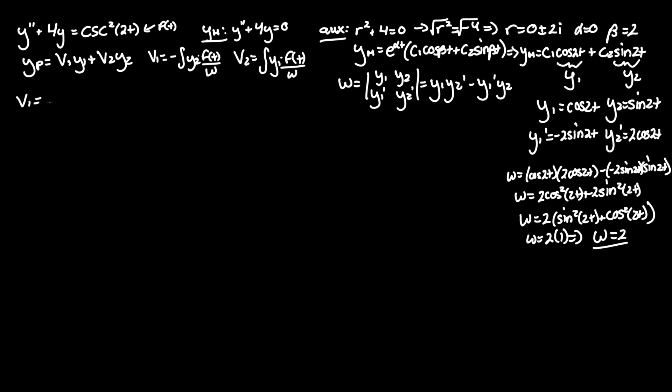Now looking back at v1, that's equal to the negative integral of y2, sine of 2t, times f of t, which we said was cosecant squared of 2t, over Wronskian, which was just 2 dt. So let's factor out 1 half, so it becomes negative 1 half integral of sine 2t times—let's just take the inverse of this term, which is just 1 over sine squared of 2t dt.